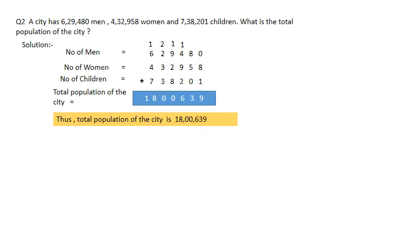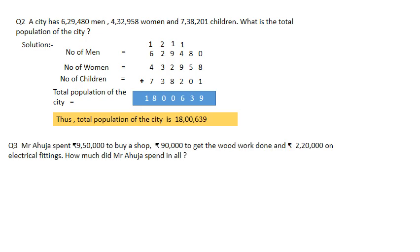Question number 3. Mr. Ahuja spent rupees 9,50,000 to buy a shop, rupees 19,000 to get the wood work done, and rupees 2,20,000 on electrical fitting. How much did Mr. Ahuja spend in all? The information given: he bought a shop for 9,50,000, got wood work done for 19,000, and electrical fitting for 2,20,000. 'In all' means we are supposed to add. Let's write down the solution.